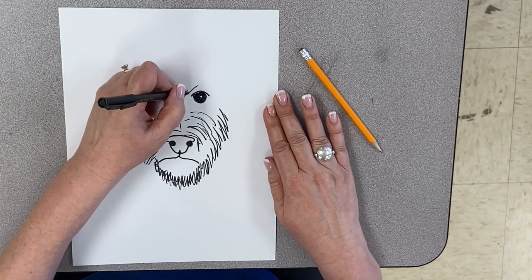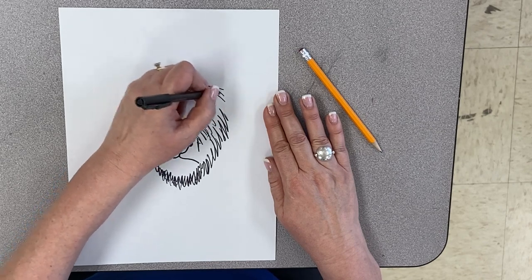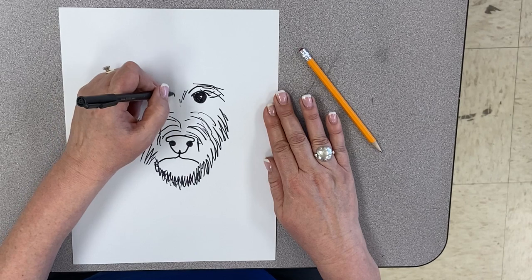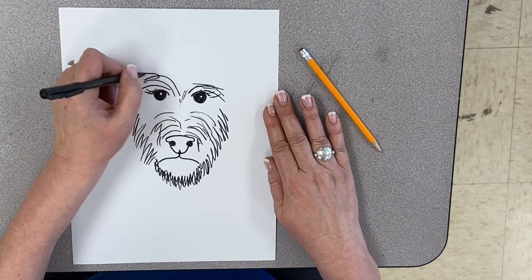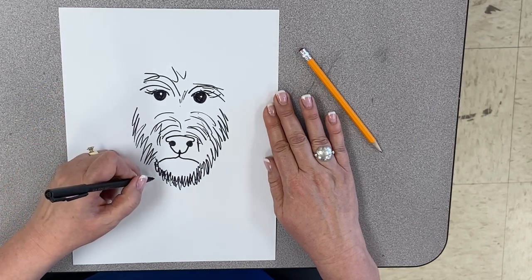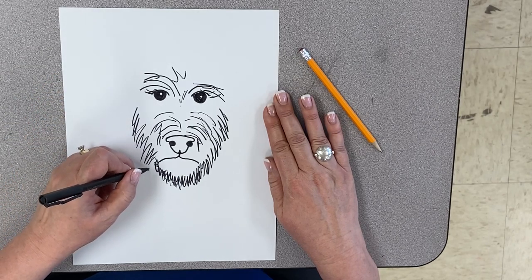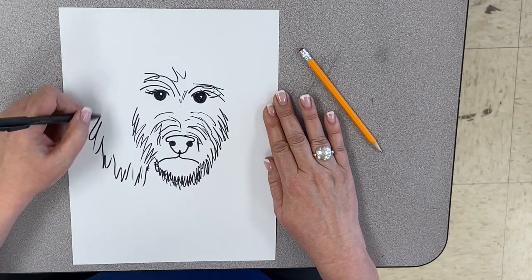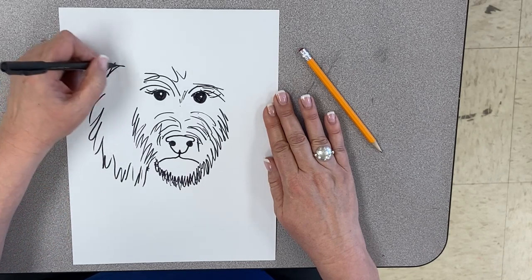All right. So then we're going to have some lines coming up here because he's got these big old eyelashes. And then we're going to come down here about where his face is, and we're just going to do some zigzaggy, shaggy old lines coming up like this.